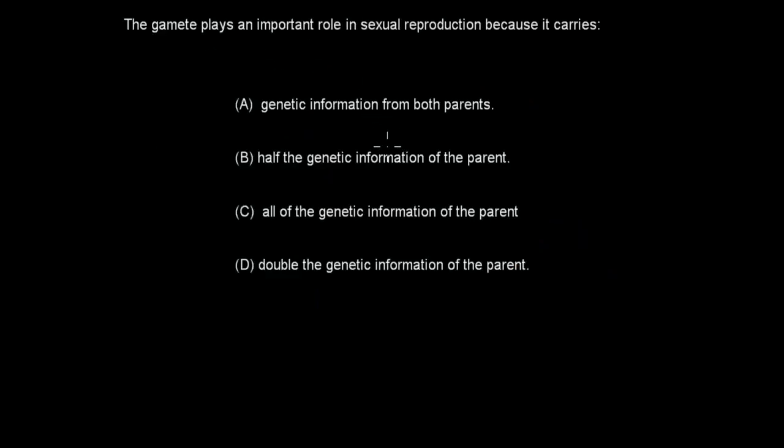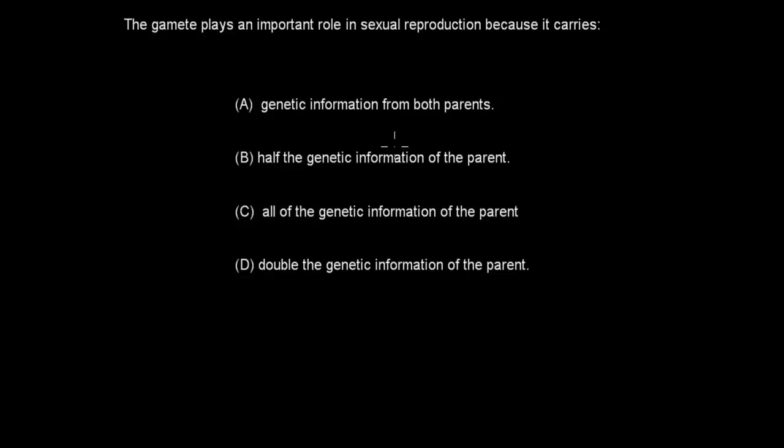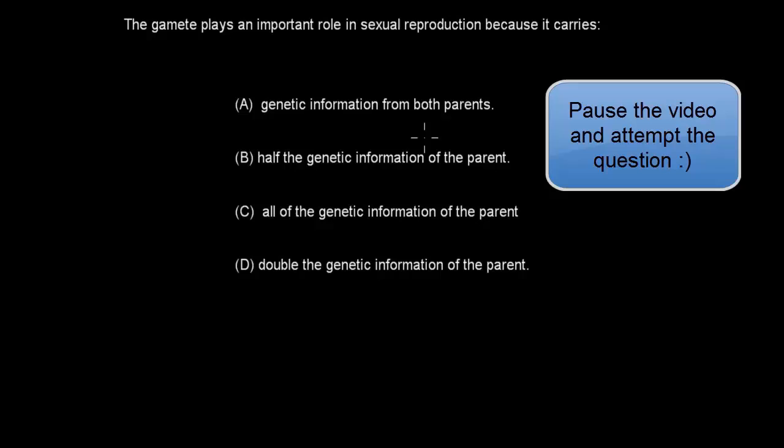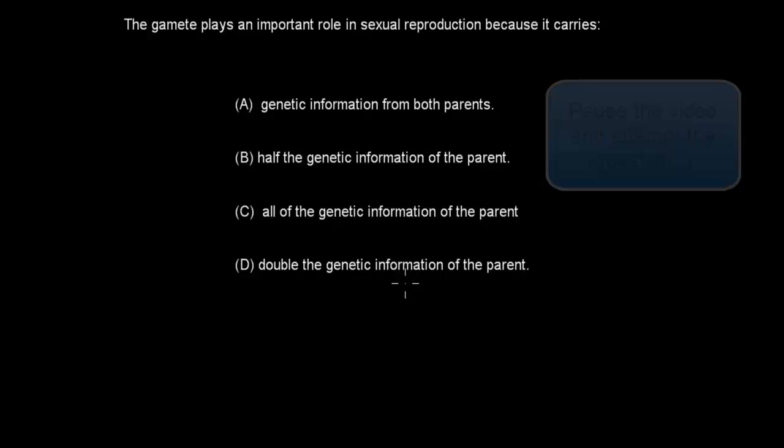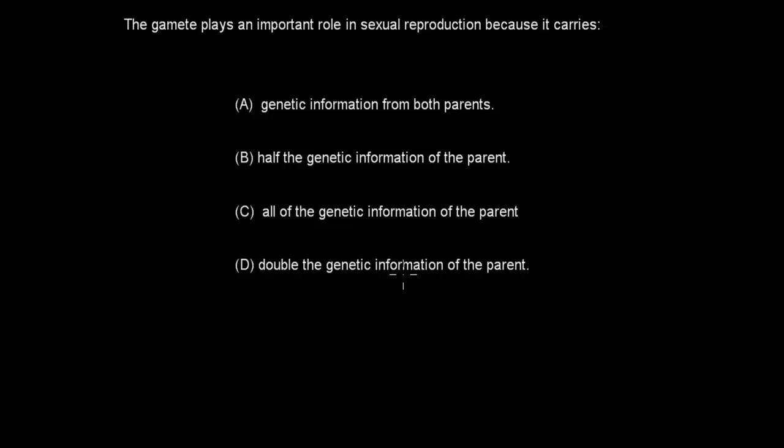Next question. The gamete plays an important role in sexual reproduction because it carries: A, genetic information from both parents. B, half the genetic information from one of the parents. C, all of the genetic information from the parent. D, double the genetic information of the parent. When you're ready, pause the video and attempt the question. Welcome back. In this case, the correct answer is B. They are haploid. They have half the genetic information of the parent. So they don't have the full, that's going to be the zygote that is produced from the two gametes, but not the gamete itself. All the information is carried as false, and each gamete only has half of it. And they don't carry double either. So B is correct.